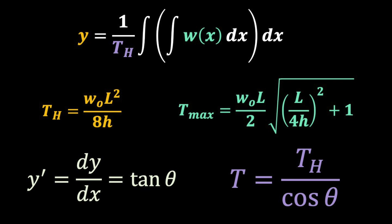We've got our general shape equation and two equations for a cable under uniform load with a zero slope at the origin: one for the horizontal tension and one for the max tension. Then we've got the relationships between the slope and angle of our cable and the total and horizontal tension components.